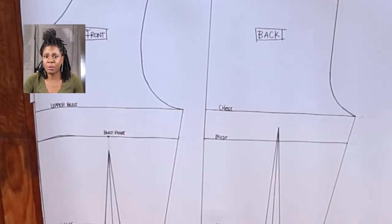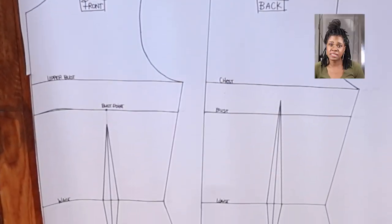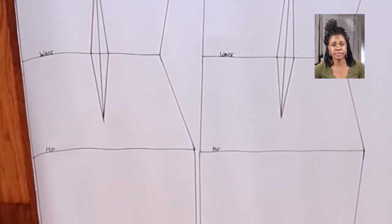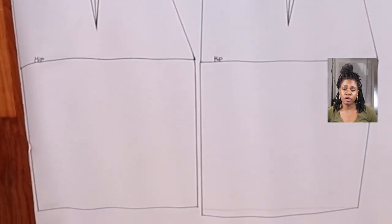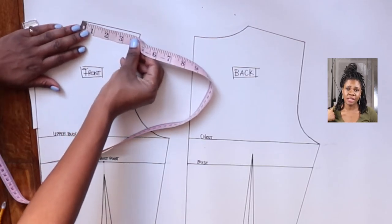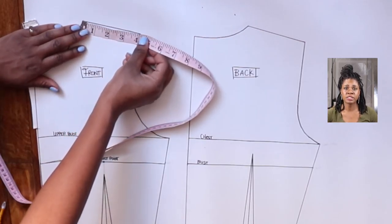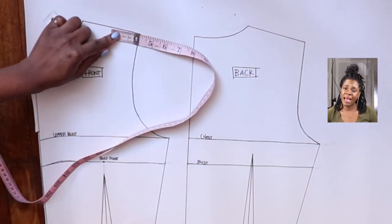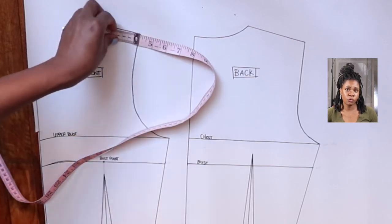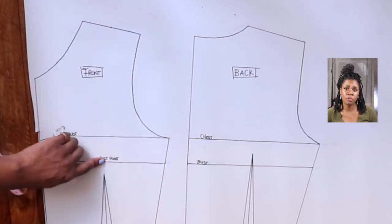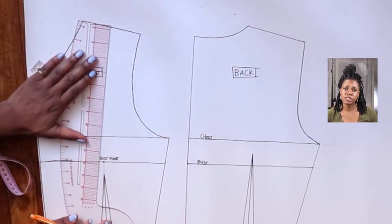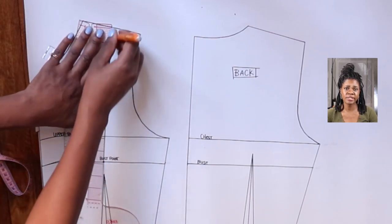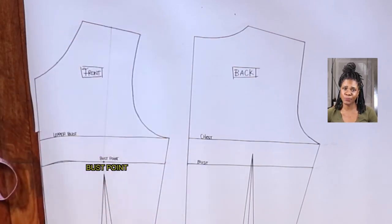Now this is optional — you don't have to do this. This is what your pattern should look like for your dress. The next thing is to go to your shoulder line and find the midpoint. In my case my shoulder line is four inches, so the midpoint would be two inches. I'm going to draw a vertical line that connects this midpoint to my bust point.